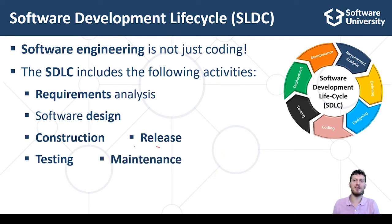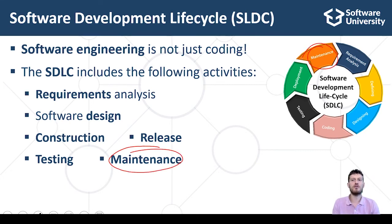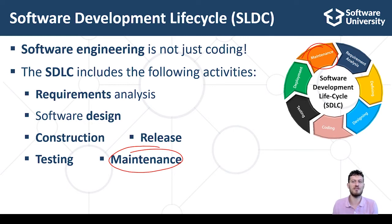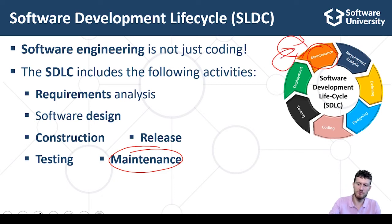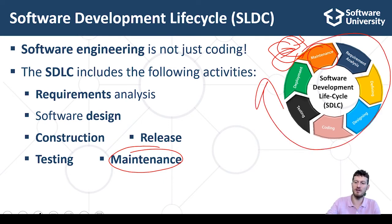Software maintenance is the process of monitoring the software and maintaining its normal operation, updating the software runtime environments, platforms and libraries, patching security problems, bug fixing, enhancing existing features and adding new functionalities to address changing requirements. Software maintenance is usually a long-lasting process that goes on for years, and is sometimes mixed with active development of new features.